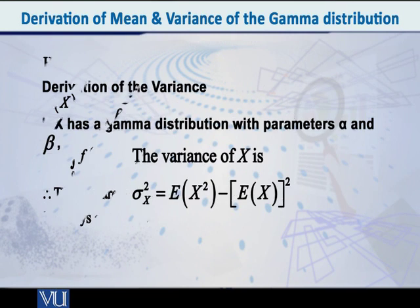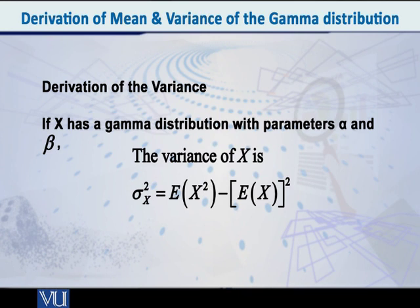Now let us talk about the variance. The variance equals alpha times beta squared, as I mentioned. For this, recall the shortcut formula for variance: the variance of x equals the expected value of x squared minus the expected value of x, whole squared. We have just found that the expected value of x is alpha beta, so alpha beta whole squared is alpha squared beta squared, which must be subtracted from the expected value of x squared.